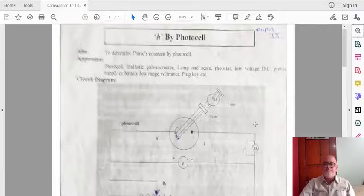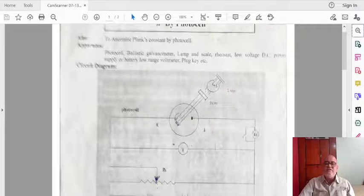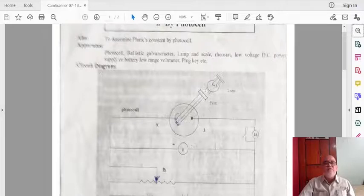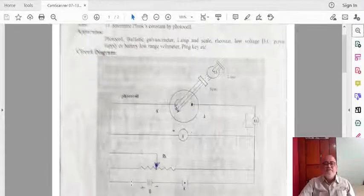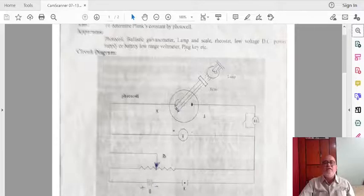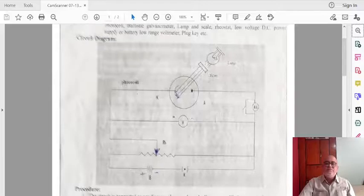For getting the idea of the scale, if we want to measure what is the deflection. Then rheostat is there, here is the rheostat. Low voltage DC power supply, here is the low voltage DC power supply, or battery of low range voltmeter, plug, this is a key. See friends, this is nothing but the circuit diagram.